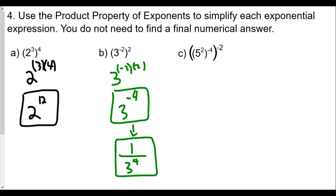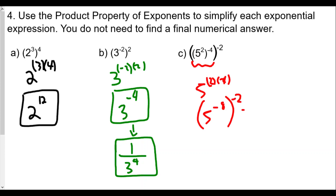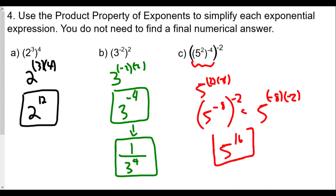For part c of question four, we have five to the negative five, to the second power, raised to negative four, and then raised to negative two. We work through this with order of operations: first take five to the second power times negative four, giving five to the negative eight. Then raise that to the negative second power — negative eight times negative two — giving us five to the positive 16th power, because negative eight times negative two is positive 16.